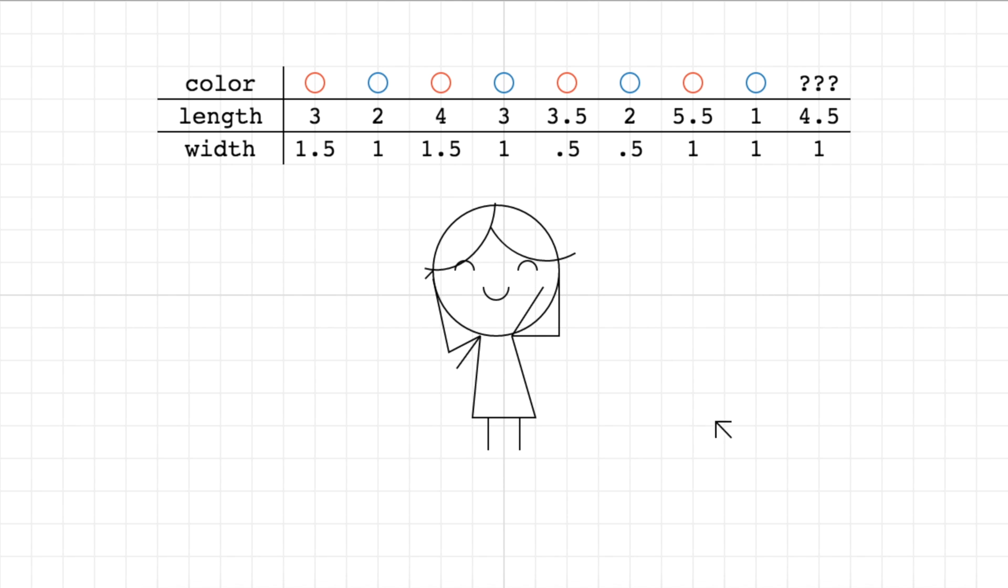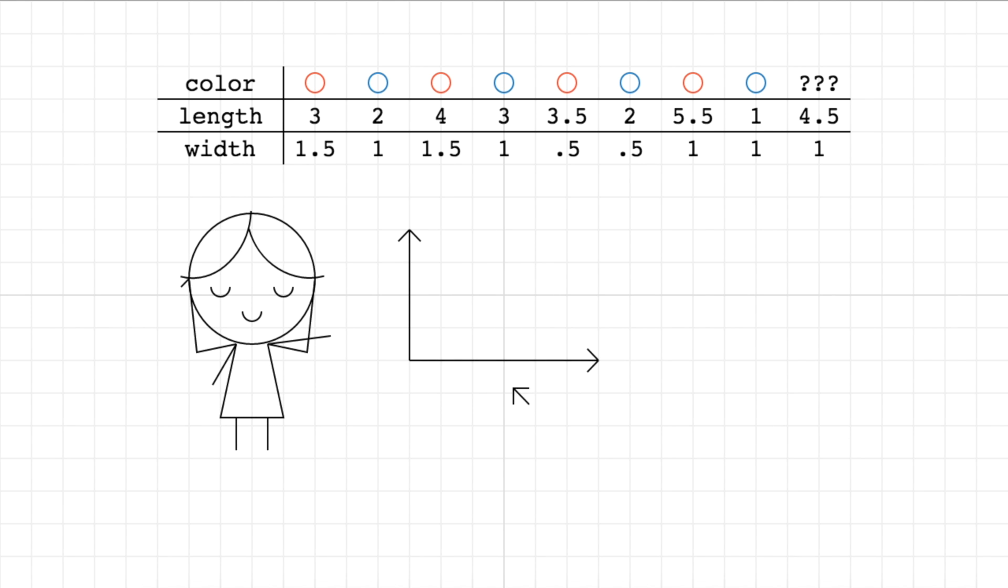Again she takes out her rulers and making sure to be consistent, she'll take the first flower that she measured. She's going to start in the same corner, and she's going to take the length measurement here and take three steps to the right, so she's basically going to plot these points. She's going to take three steps to the right and then it's one and a half steps, so this is going to be one and a half steps up and then she'll leave a mark.